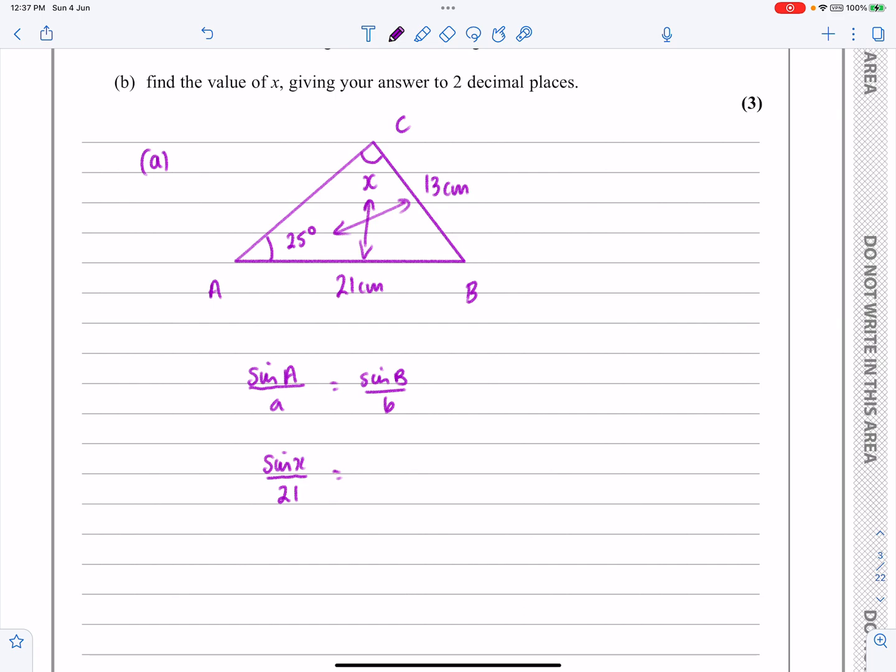This is going to be equal to sin 25 over 13. You can always use the sine rule inverted and have it as a over sin A and b over sin B, but we're looking for an angle here, so I would use this variation of it.